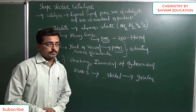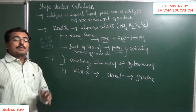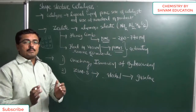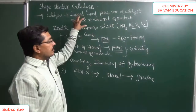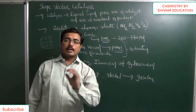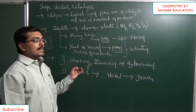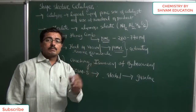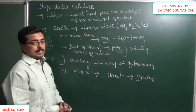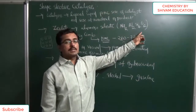So once again, shape selective catalysis is the catalysis which depends upon the pore size of the catalyst as well as the size of the reactant and the size of the product. Zeolite is the best example of a shape selective catalyst. Zeolite is an aluminosilicate with the formula Na₂Al₂Si₄O₁₂. In the three-dimensional network structure of silicate, some silicon atoms are replaced by aluminium to give aluminosilicate.